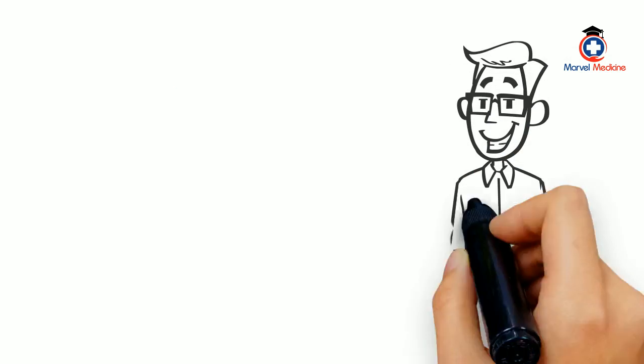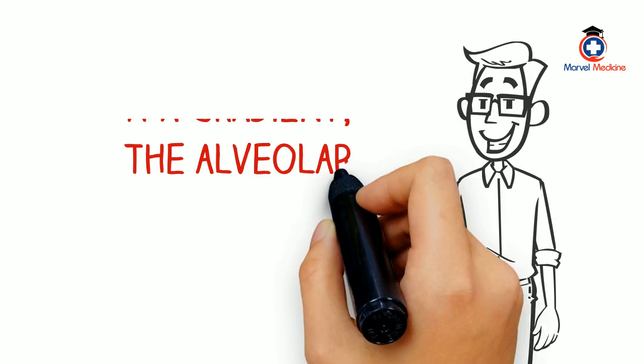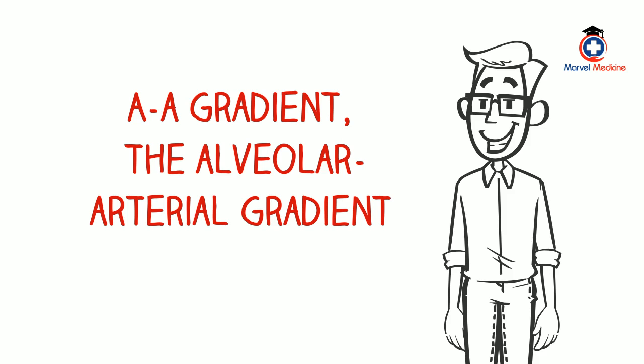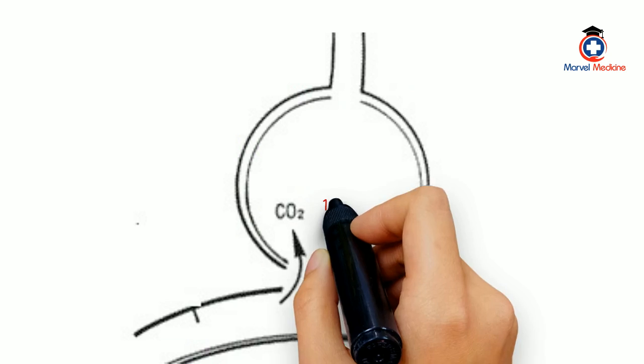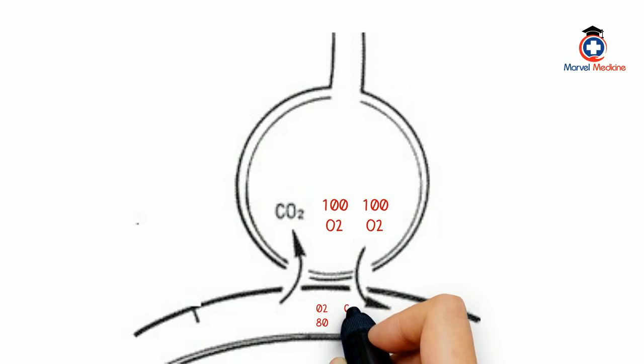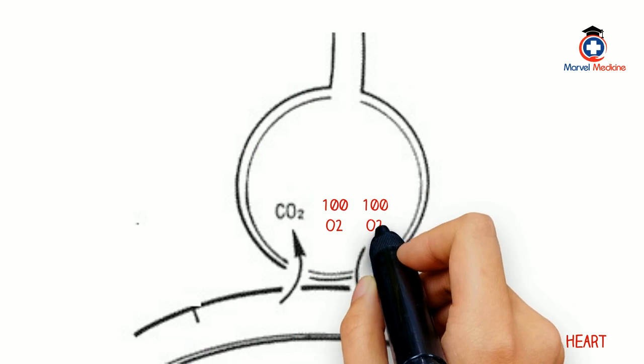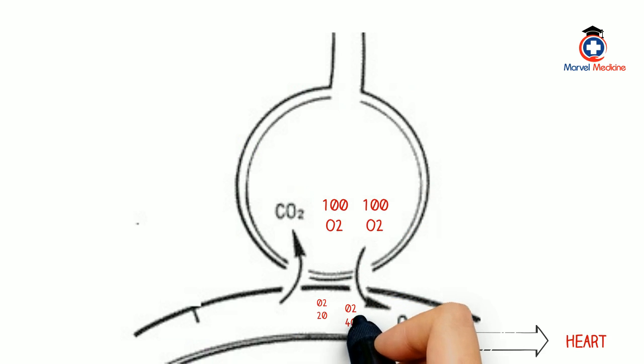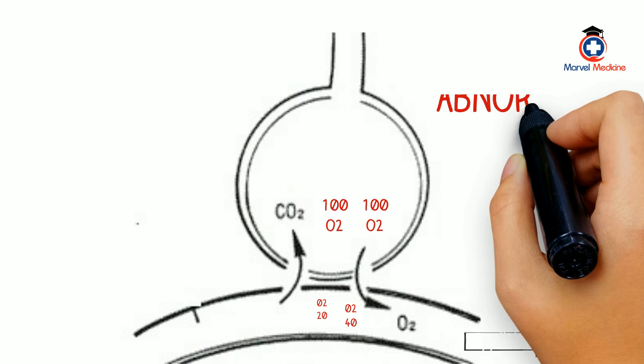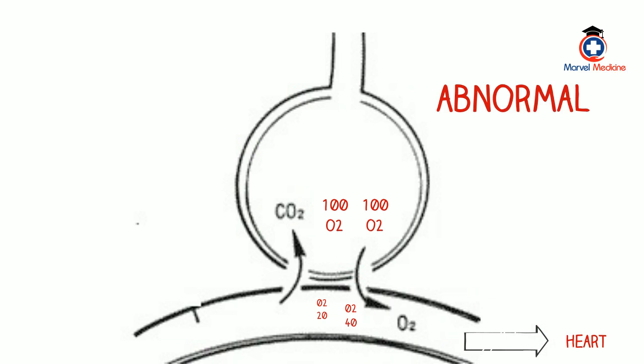Now that you understand what shunting means and have visualized it, think about the term AA gradient, the alveolar-arterial gradient. Normally, the alveoli and arterial side should equilibrate the oxygen levels, meaning whatever the oxygen pressure is in the alveoli should equal the pressure of oxygen in the artery. What if there is a defect in how the oxygen gets equilibrated? What if it doesn't get equilibrated?